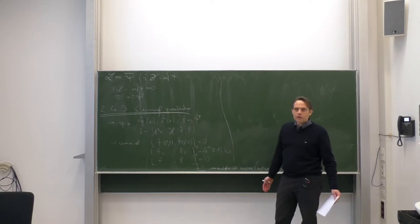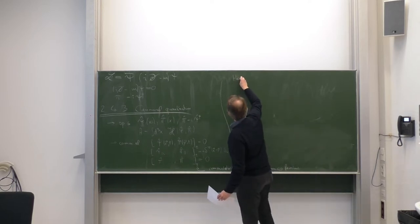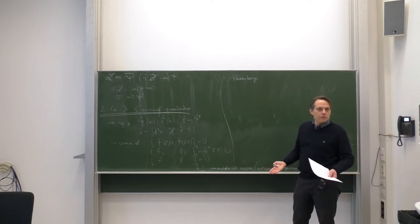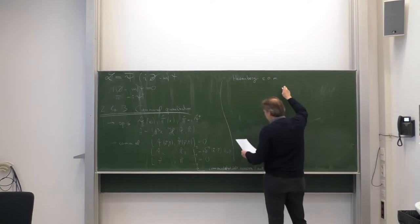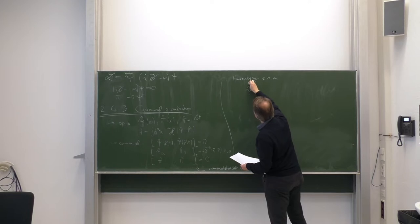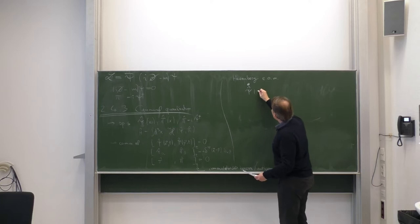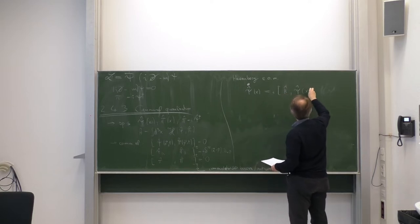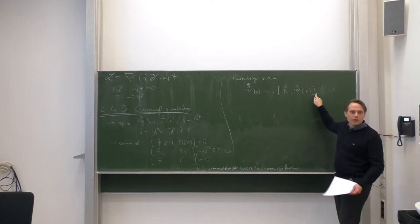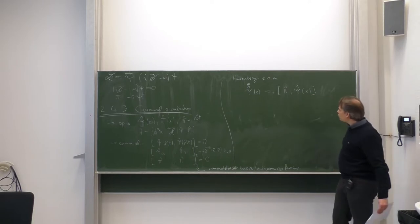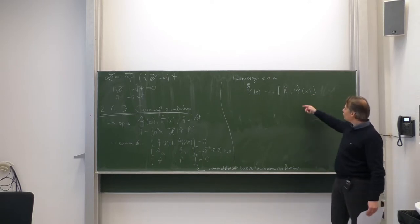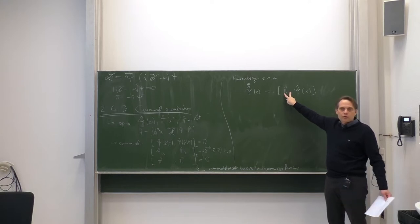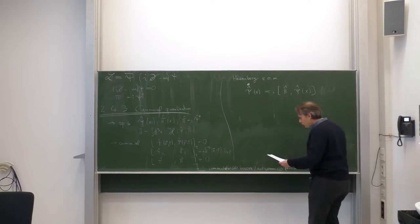The next step in our canonical quantization procedure is to work in the Heisenberg picture, where operators are time-dependent and satisfy an equation of motion. The Heisenberg equation of motion for our field operator is: psi-hat-dot of x equals i times the commutator of H with psi-hat at the same argument. Here there is always a commutator, as an automatic consequence of unitarity of time evolution. Even if the field is fermionic, the Hamiltonian always has a bosonic nature and always commutes.